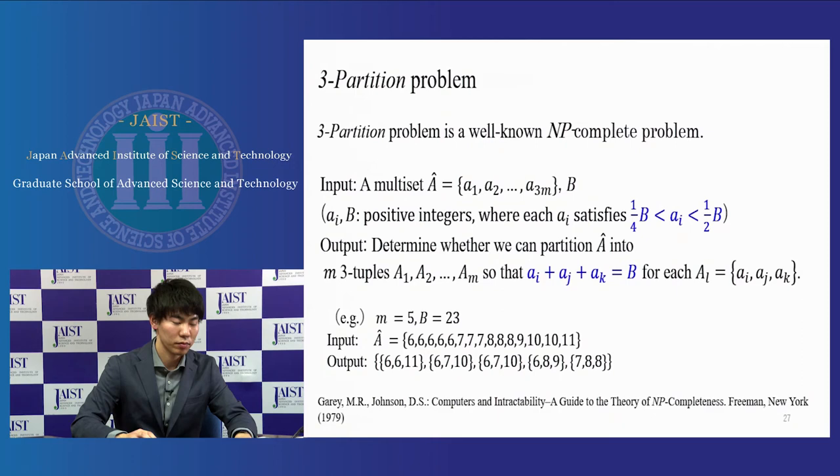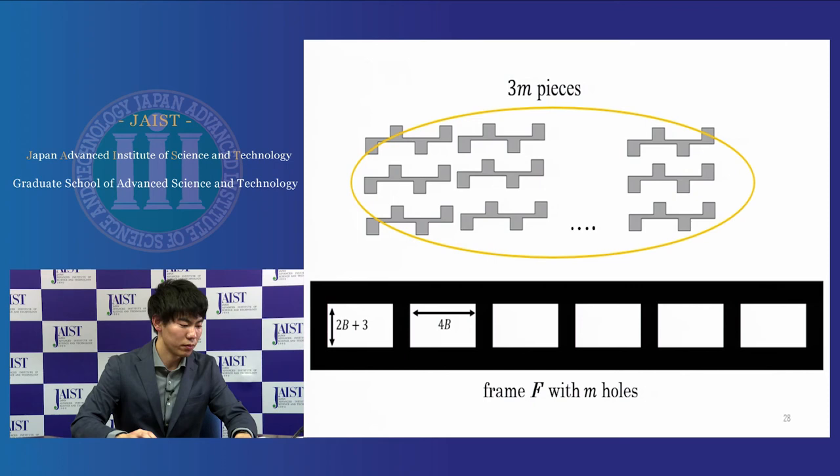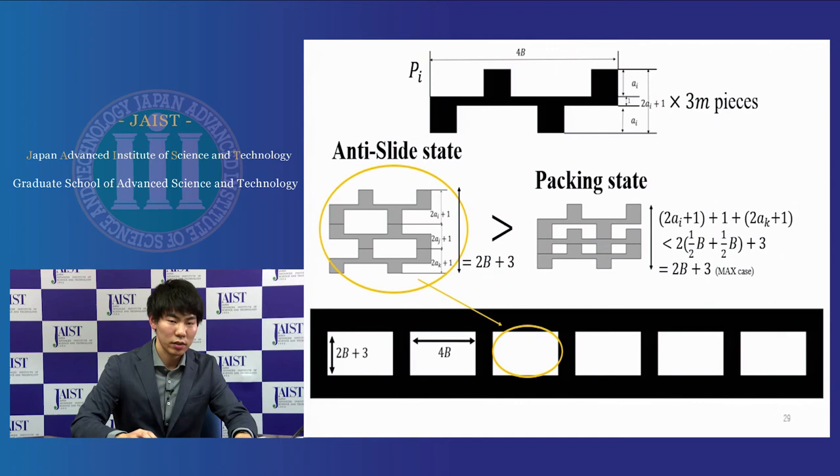Prepare these 3m pieces in a frame F with m holes, which size is 2b plus 3 times 4b. This is the setting of pieces. As you can see, making the packing state is easy. On the other hand, making the anti-slide state is hard from the hardness of 3-partition problem.